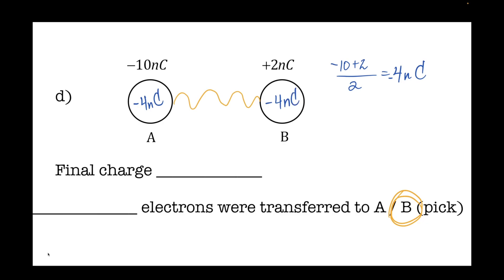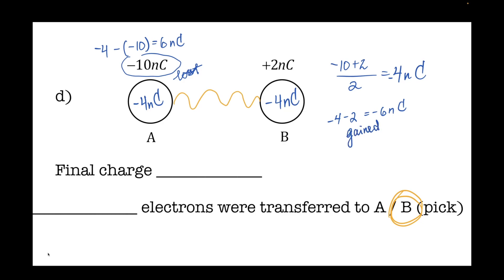You're after how many electrons are transferred. To figure that out, you need to find the change in charge — not the final, but what the change was. What's the change between negative 4 and positive 2? Negative 6 nanocoulombs. What's the change between negative 4 and negative 10? That's 6 nanocoulombs. There was a positive change for one because it lost electrons and a negative change for sphere B because that one gained electrons. Charge is conserved — whatever one sphere gained, the other lost. Electrons traveled from A to B in this case.